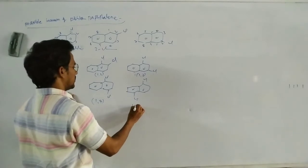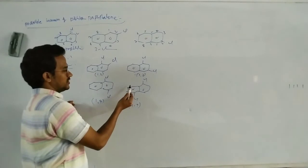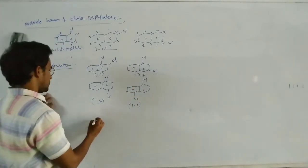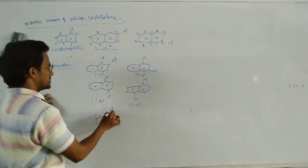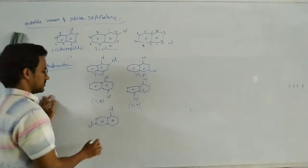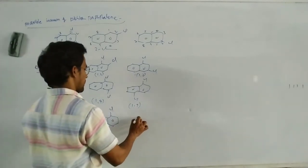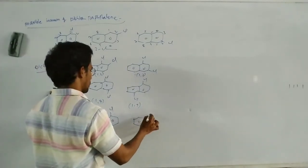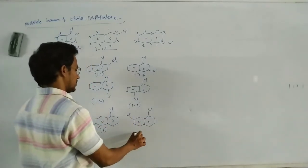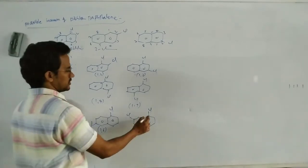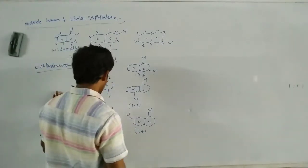Next: 1,5-dichloro — with Cl at positions 1 and 5. Then 1,6-dichloro — Cl at positions 1 and 6. Next: 1,7-dichloro — positions 1, 2, 3, 4, 5, 6, 7.